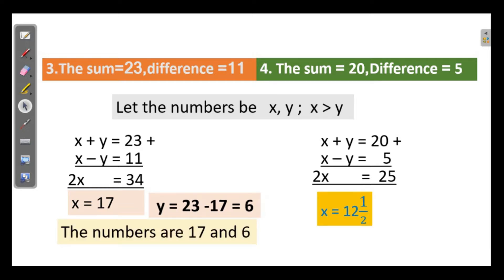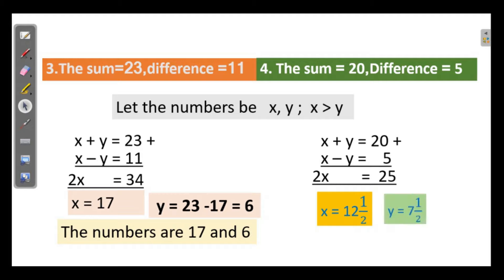The next one: the sum is 20 and the difference is 5. So x plus y equals 20 and x minus y equals 5. Adding these: 2x equals 25, so x is half of 25, which is 12 and a half. And y equals 7 and a half. Check: 12 and a half plus 7 and a half is 20. So the numbers are 12.5 and 7.5.